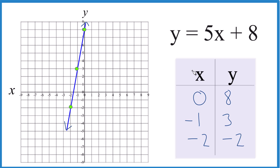You can put any values in for x, get a value for y, and it's going to be on this line. I just chose these because they fit nicely on the graph. This is Dr. B graphing y equals 5x plus 8 — thanks for watching.